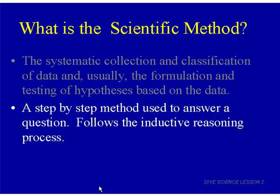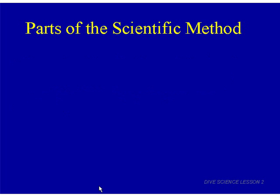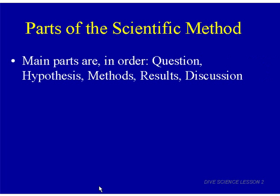Remember in lesson one we talked about inductive reasoning — a step-by-step method that follows the inductive reasoning process. In other words, we start with facts, things that are observed, and we draw general conclusions based on those facts. So if the scientific method is a step-by-step method, it must have different parts to it. Here are the main parts in order: question, hypothesis, methods, results, and discussion.